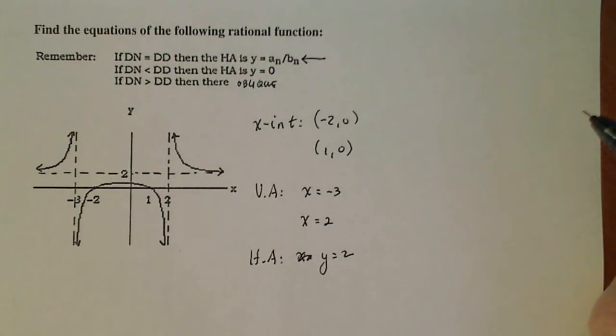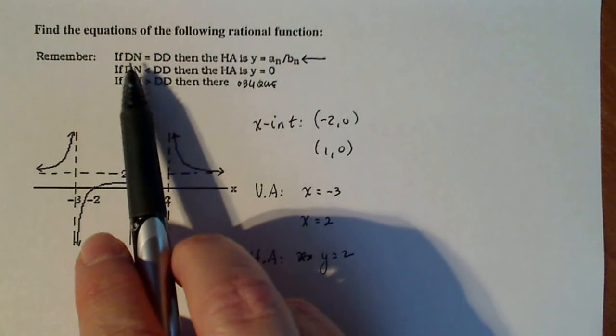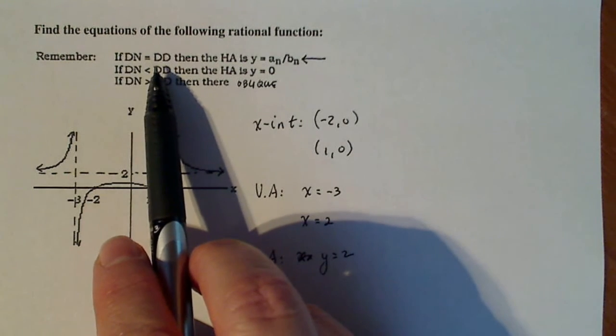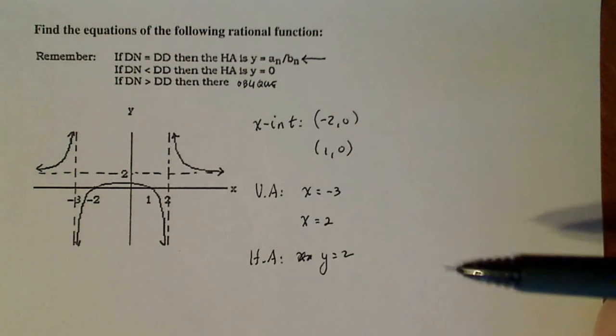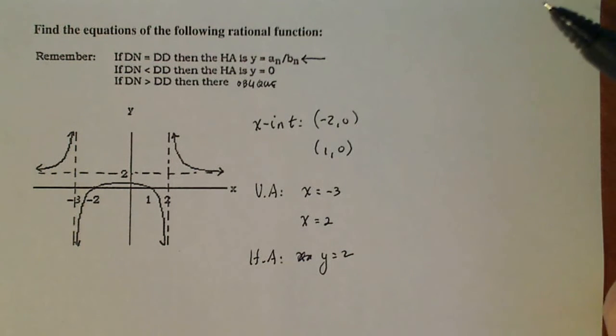I have a horizontal asymptote that is a number. So my ratio of leading terms, or the degree of my numerator, has to equal the degree of my denominator, and my ratio of leading terms has to be two.